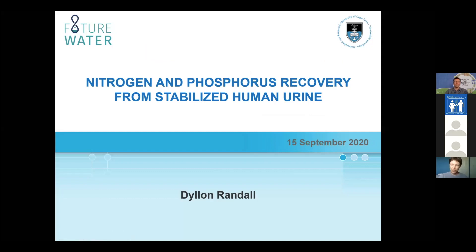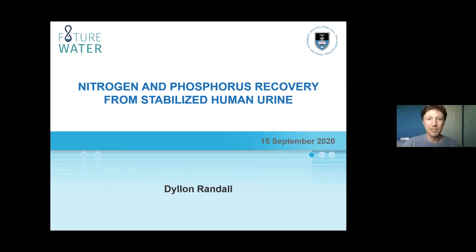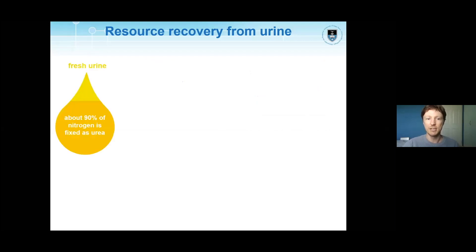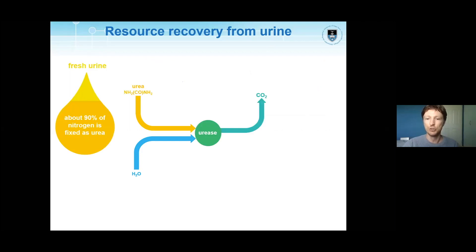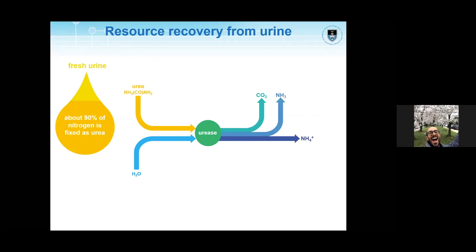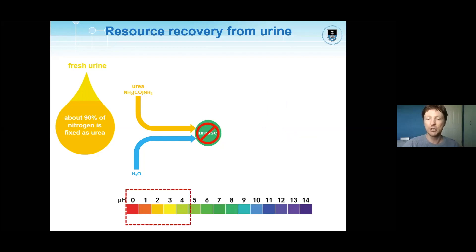Thanks for that introduction — I'm going to get straight into it. When we look at resource recovery from urine, about 90% of the nitrogen is fixed as urea. This urea degrades in the presence of an enzyme called urease to produce CO2 or carbonate ions, and ammonia or ammonium, depending on the pH of the system. We can prevent this reaction from occurring by operating at a low pH.